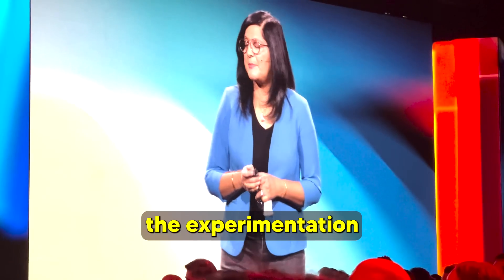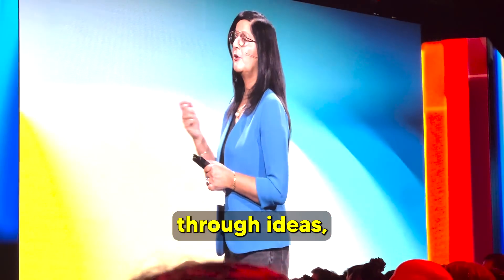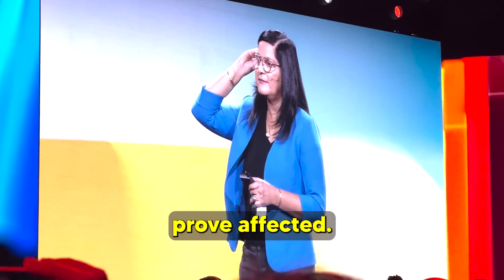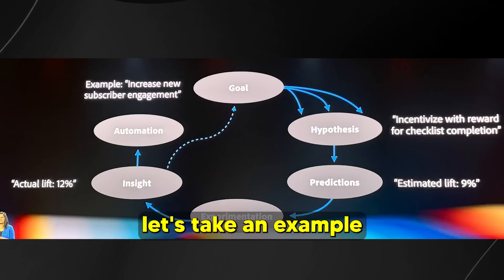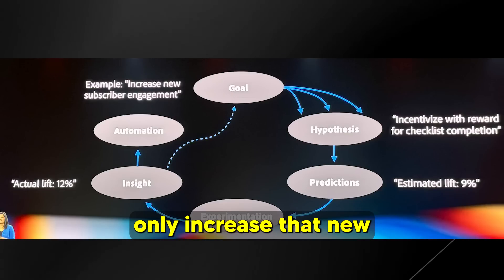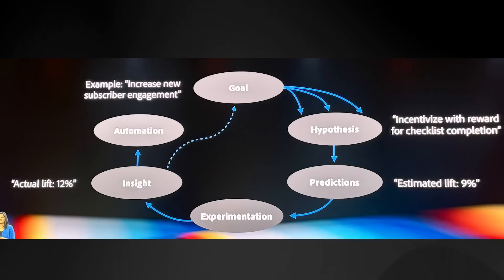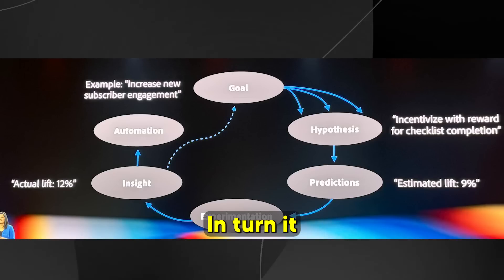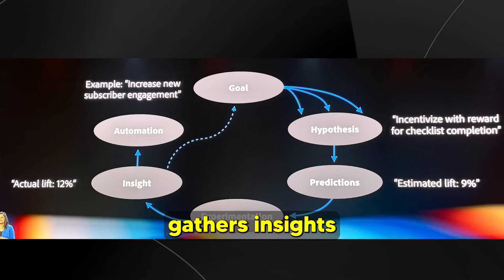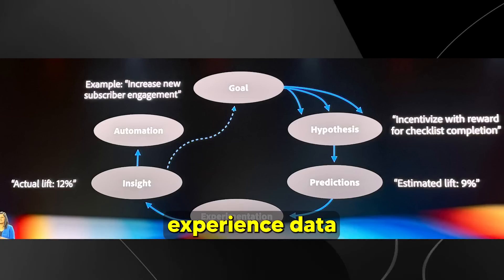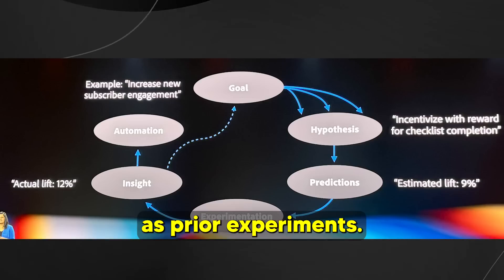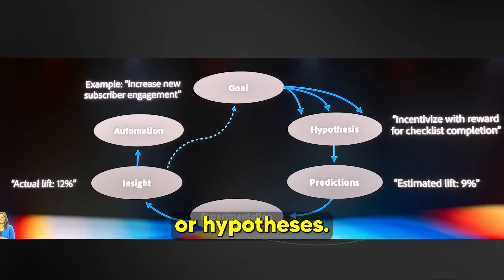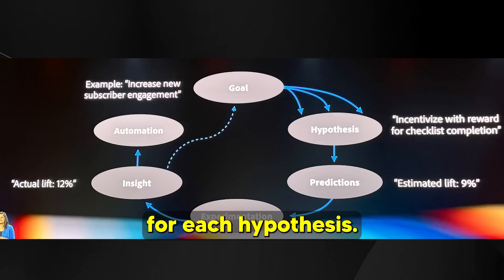The Experimentation Agent lets you quickly cycle through ideas, deploying the ones that prove effective. Say you want to increase new subscriber engagement — you present this to the agent, it gathers insights from your customer experience data as well as prior experiments, and generates multiple ideas or hypotheses. It even predicts results for each hypothesis.